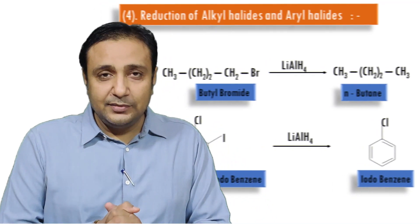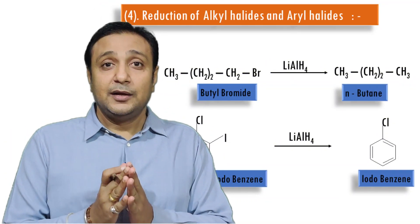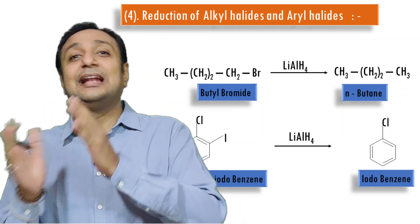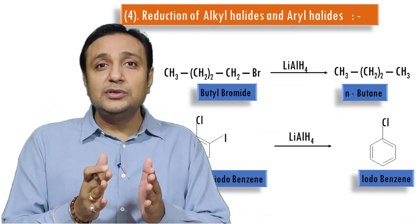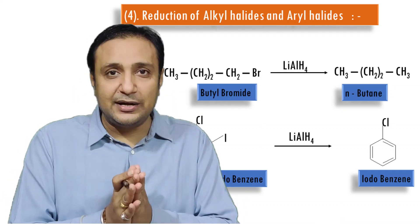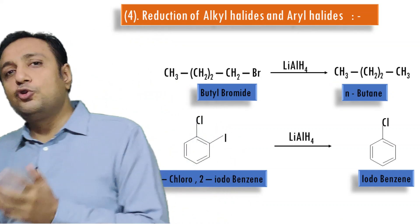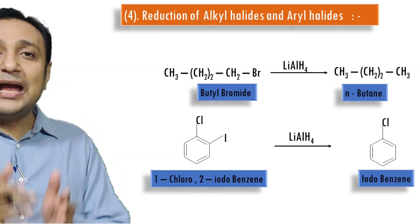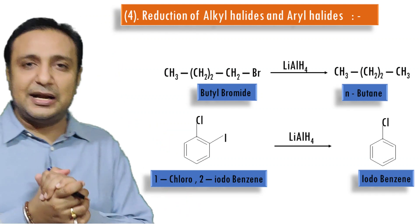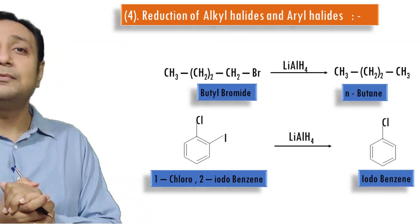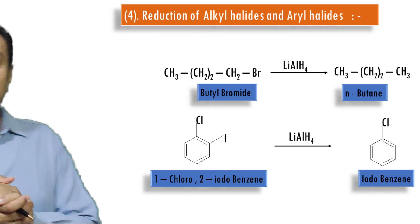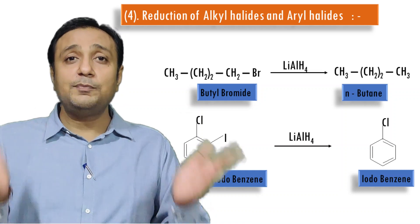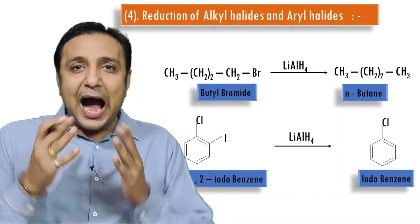The fourth application — reduction of alkyl halides and aryl halides — is last but not least, and is a very important application. Alkyl halides undergo reduction with LAH followed by hydrolysis to produce alkanes. For example, butyl bromide gives n-butane. For aryl halides, 1-chloro-2-iodobenzene undergoes reduction followed by hydrolysis to produce iodobenzene, where the chloro group is selectively removed.